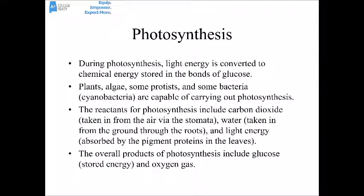The reactants for the process include CO2, which is taken in through the stomates or stomata, usually on the bottoms of the leaves; water taken in through the roots from the ground; and light, which is absorbed by the pigment proteins like chlorophyll and the carotenoids located in the leaves. The overall products of photosynthesis include glucose and oxygen gas.